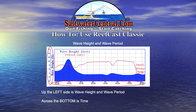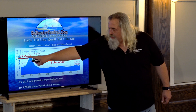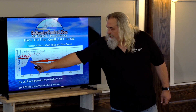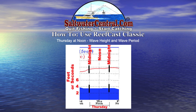Now we're on the wave height and wave period portion. The wave height is up the side and the dates are across the bottom. We come up to Tuesday at noon, up to where the blue blob is — it's 11 feet. We come up to where the red line is — 8 seconds. Thursday at noon: 3 feet at 9 seconds. It's also showing that the wave height and wave period are stable throughout the day. The wave period is going to increase just a little over the course of the day, and you can see the wave heights staying pretty constant all day long.